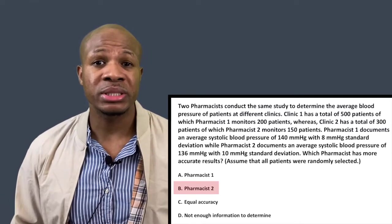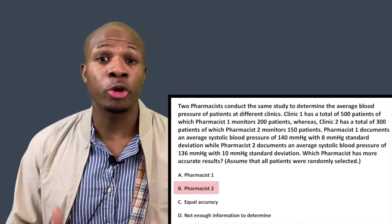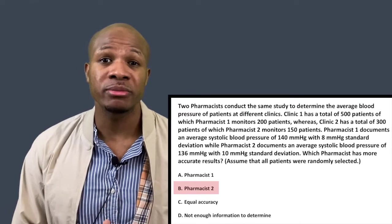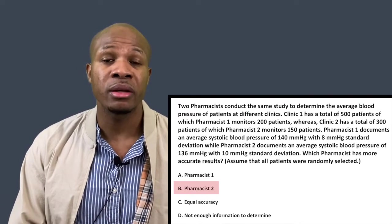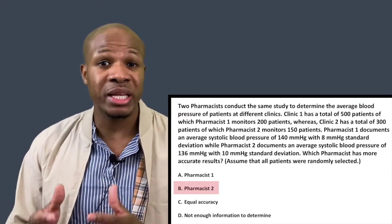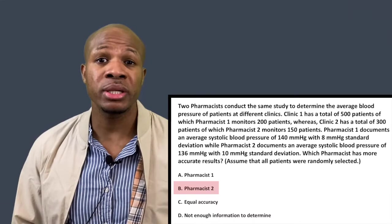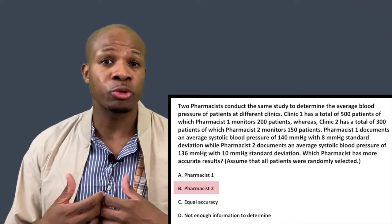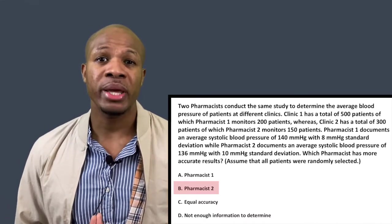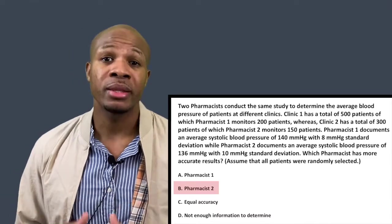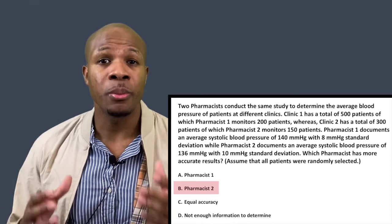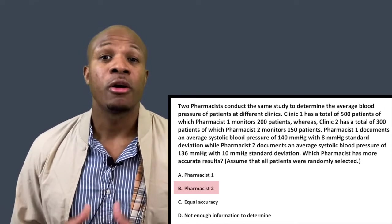Pharmacist two had a sample size of 50% of the total population — 150 out of 300 — whereas pharmacist one monitored only 200 out of 500, which is less than 50%. Since both studies were done the same way and all patients were randomly selected, pharmacist two obtains more accurate results. The correct answer is pharmacist two — answer choice B. The larger your sample size relative to the total population, the more accurate your results will be.